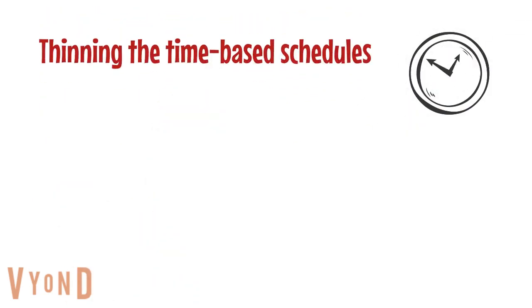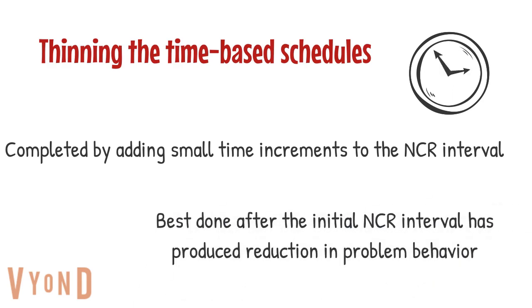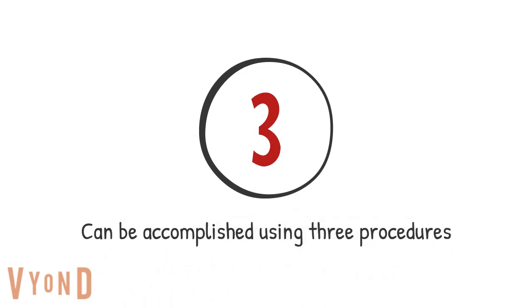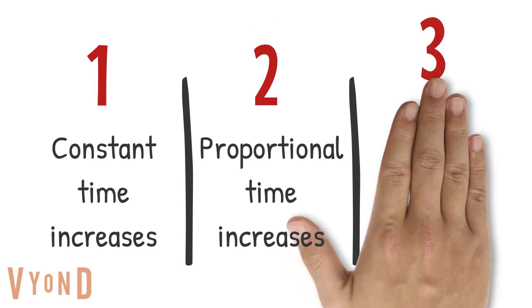To thin time-based schedules, add small increments of time to the NCR interval — such as 30 seconds, one minute, or two minutes. The best time to increase the NCR interval is after the current interval has produced success or reduction in problem behavior. This can be accomplished using three different procedures: constant time increases, proportional time increases, and session-to-session time increase or decrease.